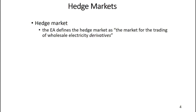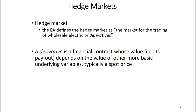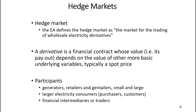The EA defines the hedge market for electricity as the market for the trading of wholesale electricity derivatives. A derivative is a financial contract whose value — in other words its payout — depends on the value of other more basic underlying variables, typically a spot price in the electricity market. The participants in the hedge market are generators, retailers, gentailers, small and large electricity consumers — either as a spot purchaser direct from the spot market or as the customer of a retailer buying at spot price — and these days financial intermediaries or traders, who may be buying or selling in one hedge market in order to sell or buy in another, or simply to make money from trading.